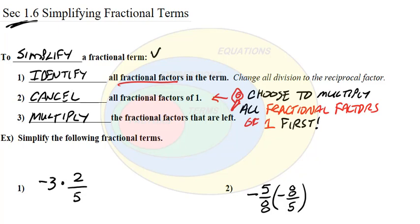Any division we have, we're going to change to the reciprocal factor — we invert and multiply. The next thing we do is cancel all fractional factors of 1. What we're doing is basically choosing to multiply the fractional factors of 1 first, and then when we're done with those, just multiply the rest of the factors together.